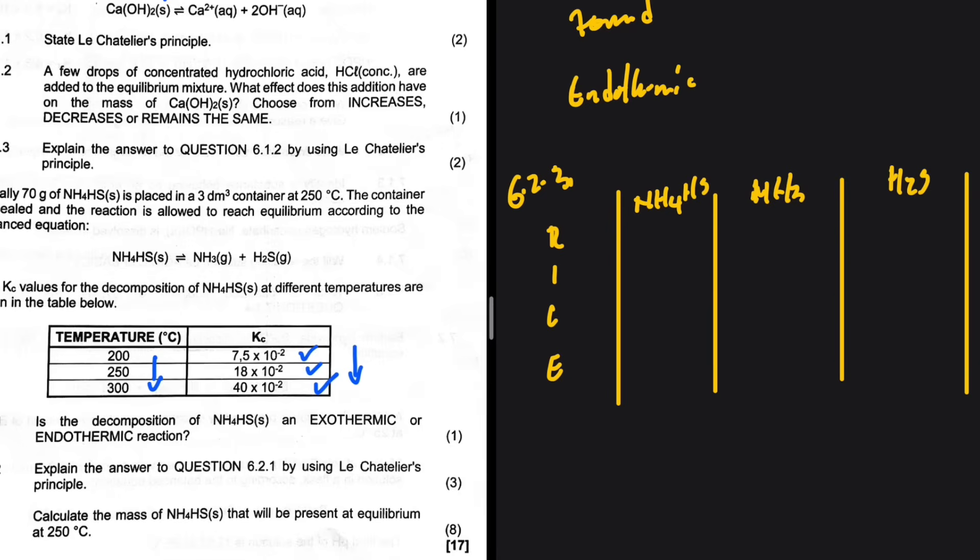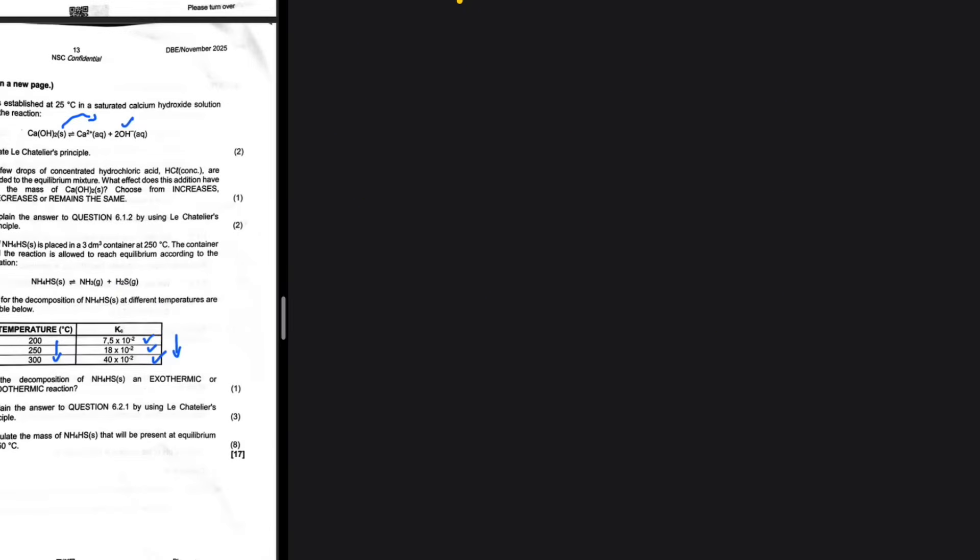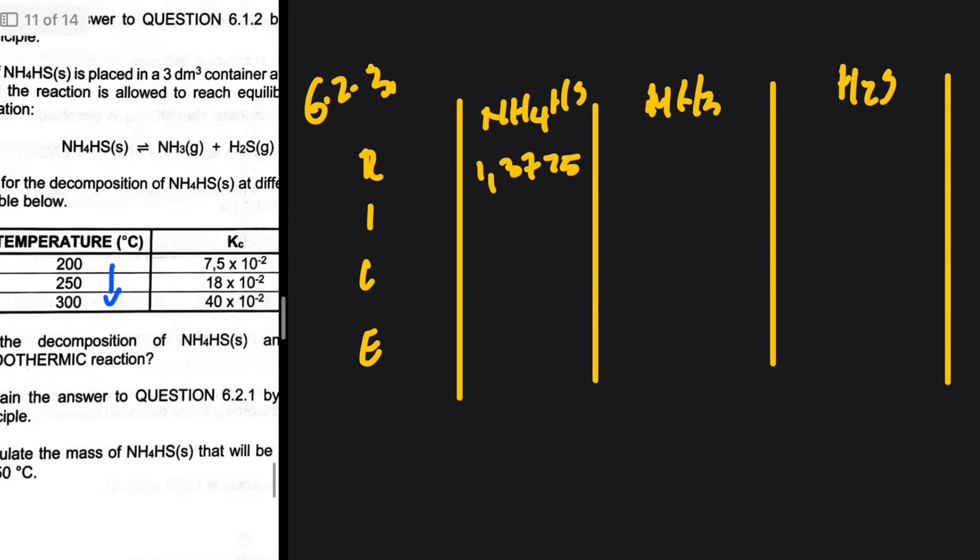Initially, the mass of NH4HS is 70 grams. I want to substitute the number of moles. The molar mass of NH4HS: one nitrogen which is 14, five hydrogens which is 5, plus sulfur which is 32, so the molar mass is 51. So I have 70 over 51, which is 1.3725 moles. I want my answer to be as accurate as possible, so I'm going to leave it at four decimals.